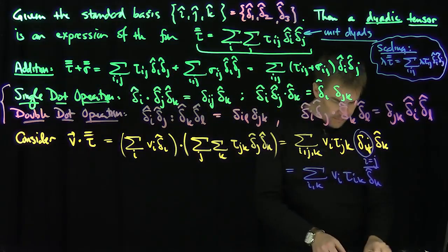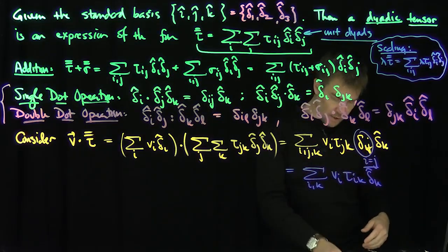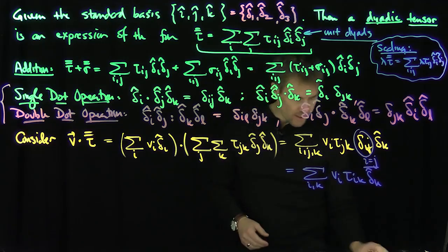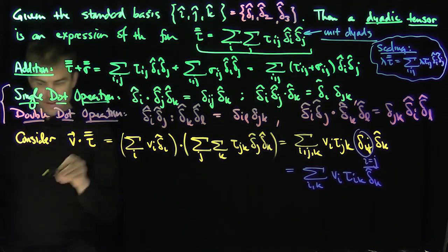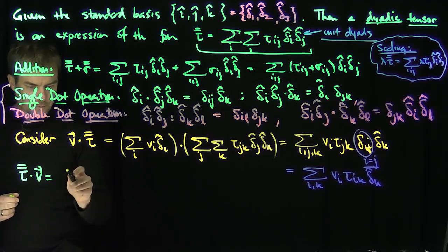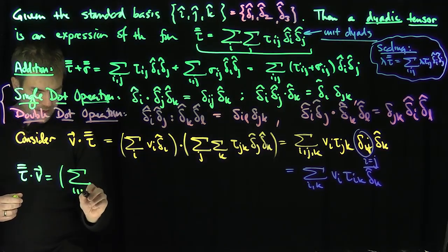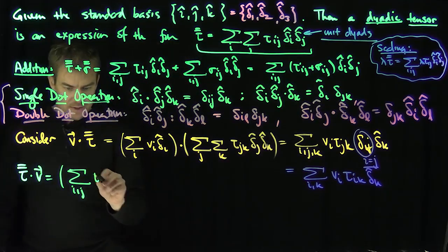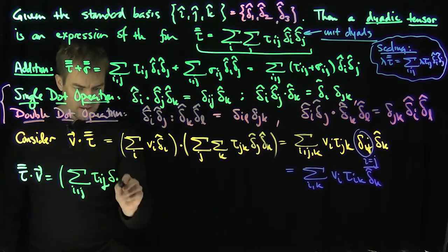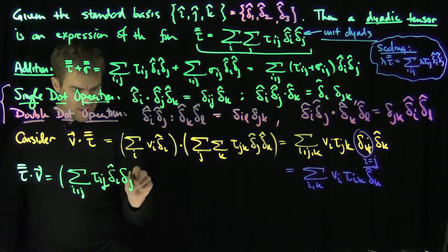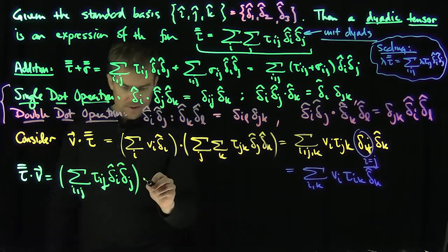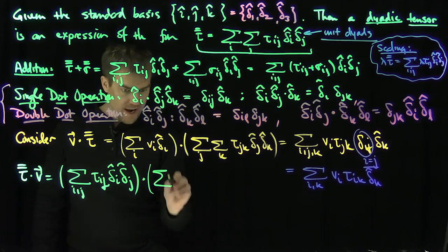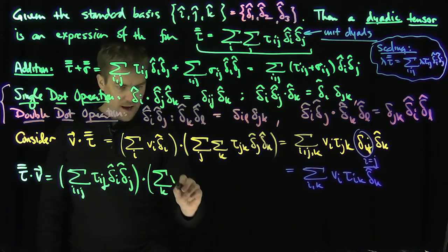Now to show interesting algebraic structure where commutativity plays a role, let's do the opposite direction: tau-bar-bar dot v. I'll use i, j for tau — the sum over i, j of tau_ij delta-i-hat delta-j-hat — single-dotted with the sum over k of v_k delta-k-hat. Note that using different index names is fine as long as we're consistent.